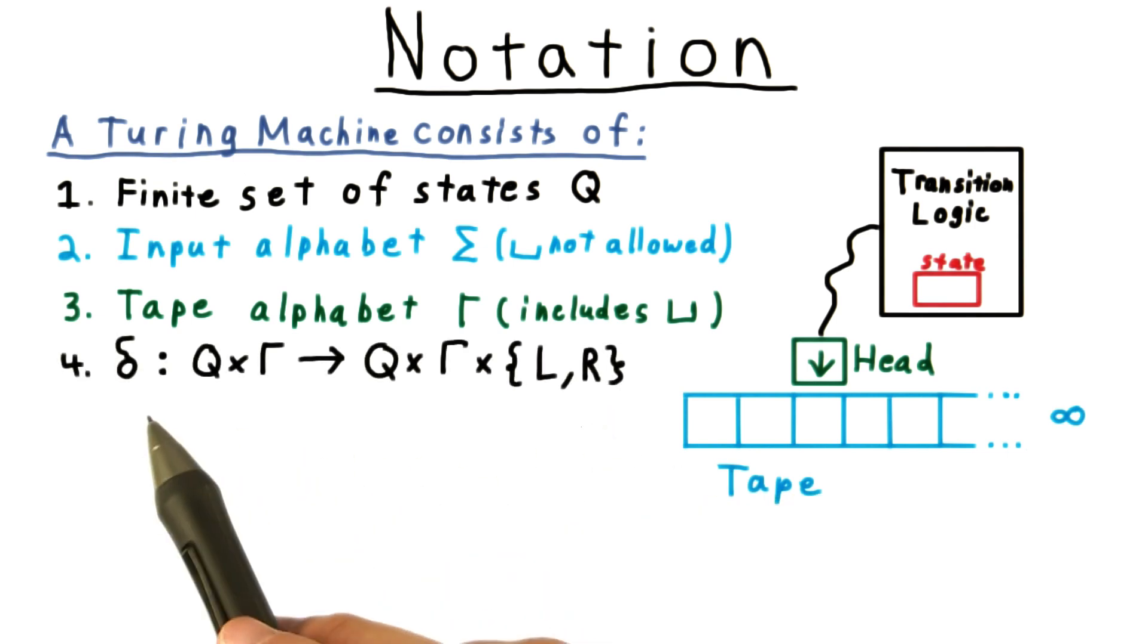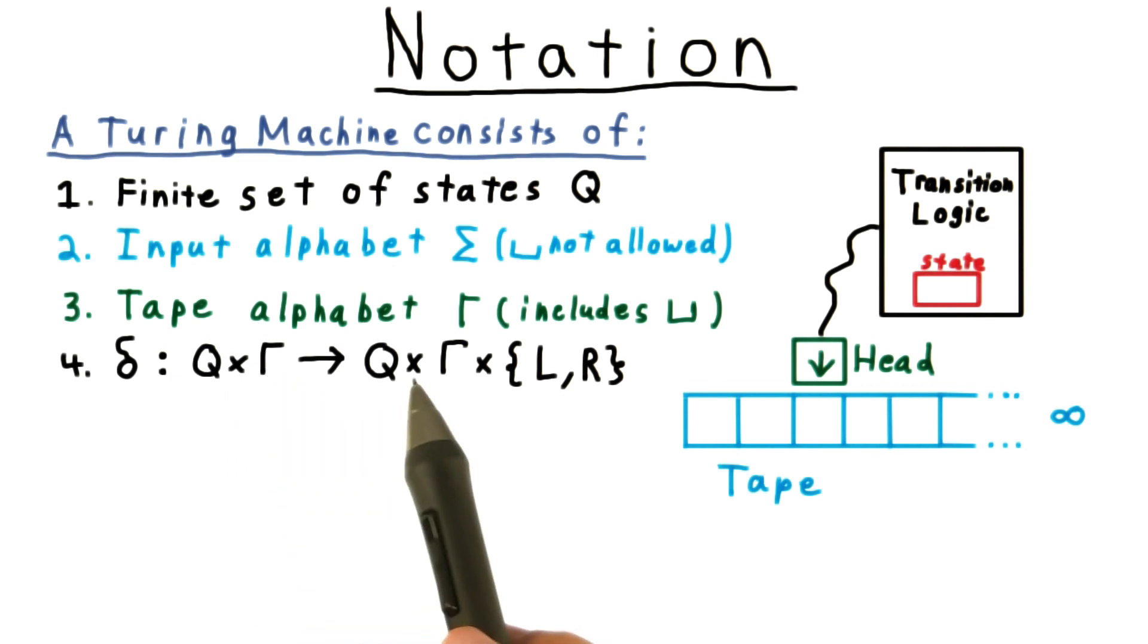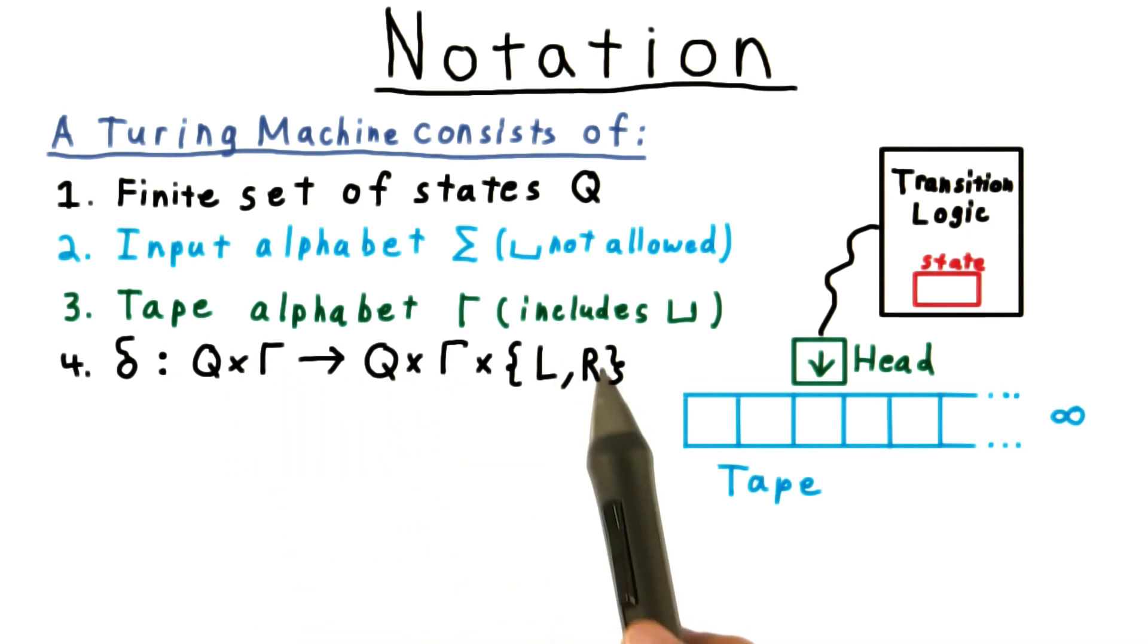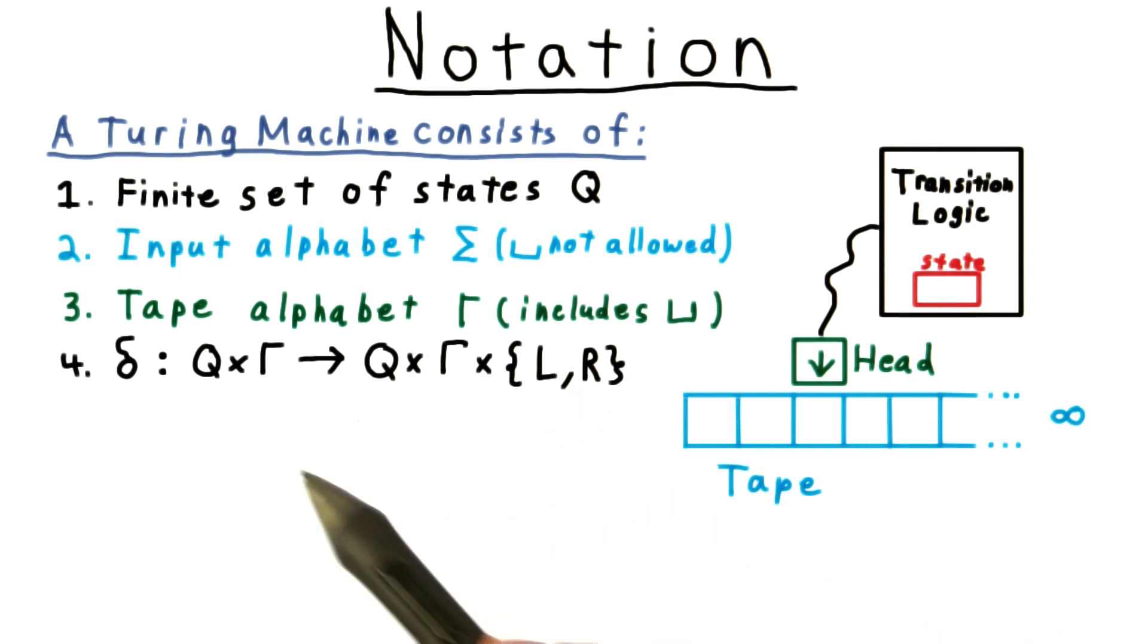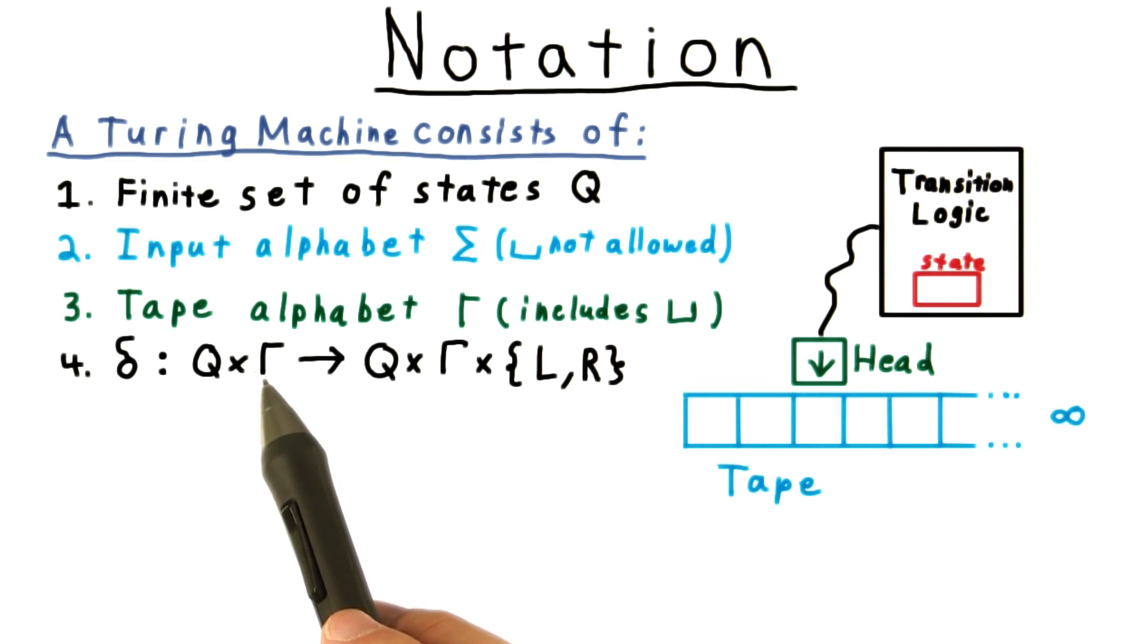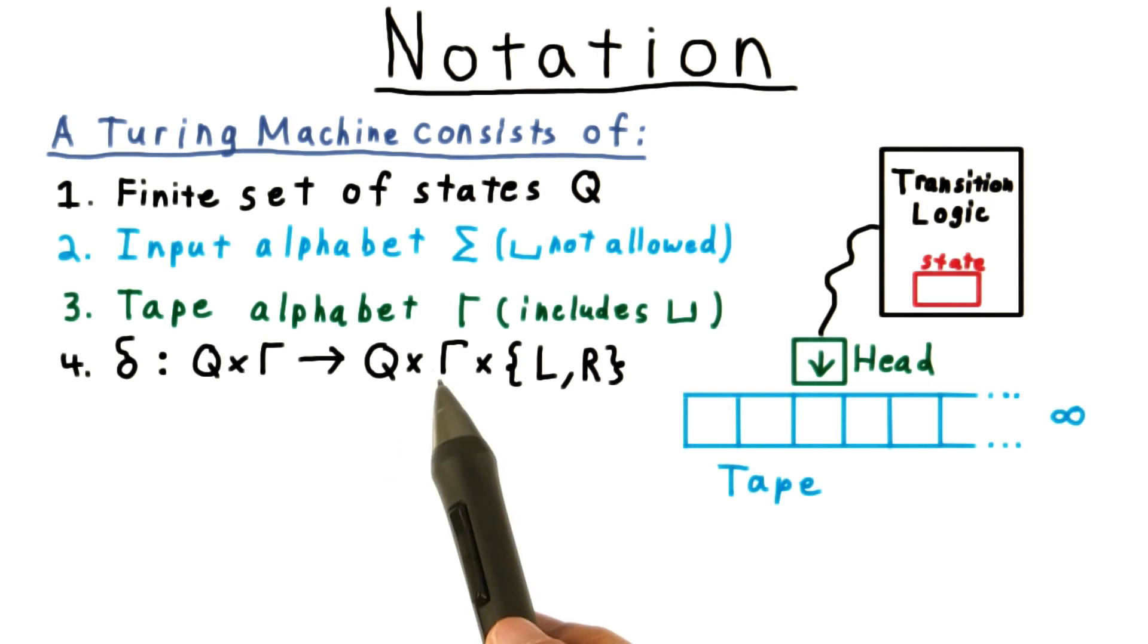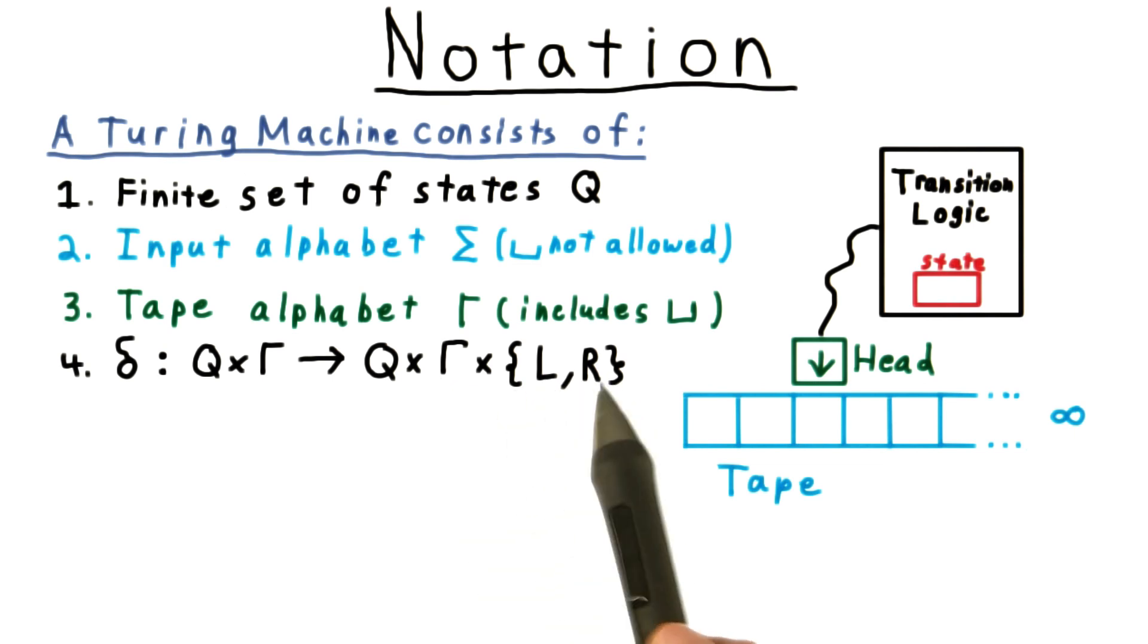A Turing machine also specifies a transition function from a state tape symbol pair to a state tape symbol direction triple. This, of course, tells the machine what to do. For every possible current state and symbol that could be read, we have the appropriate response. The new state to move to. The symbol to write to the tape. You can make this the same as the input one to leave the tape alone. And the direction to move the head relative to the tape.